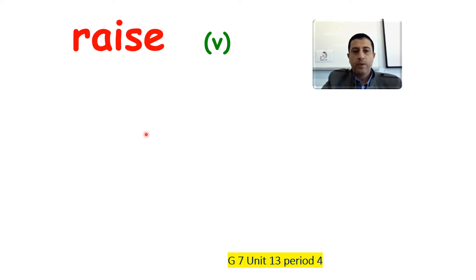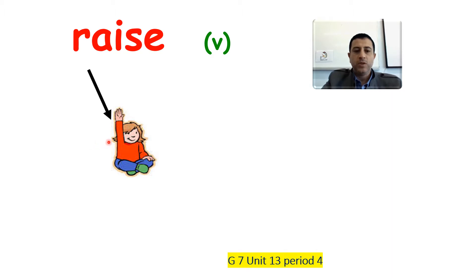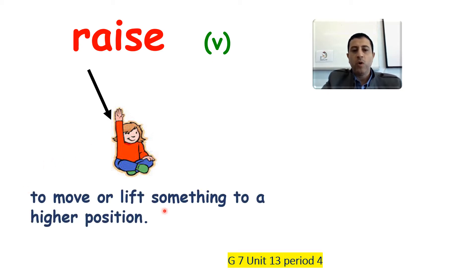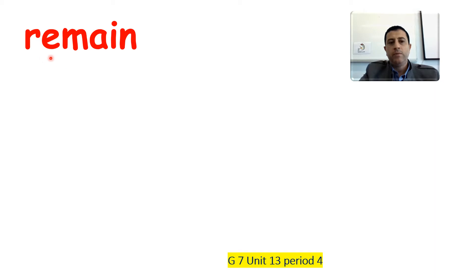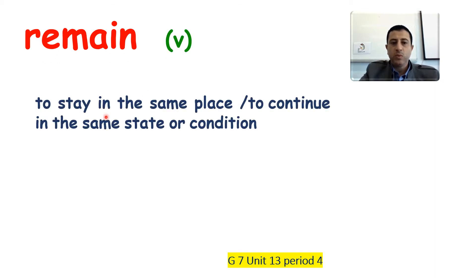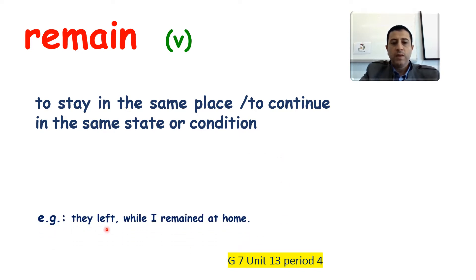The next word is 'raise.' Raise is a verb. Look at this girl — she raised her hand. Raise means to move or lift something to a higher position. The last word is 'remain.' Remain is a verb. It means to stay in the same place or to continue in the same state or condition. An example: They left while I remain at home — I stayed at home.